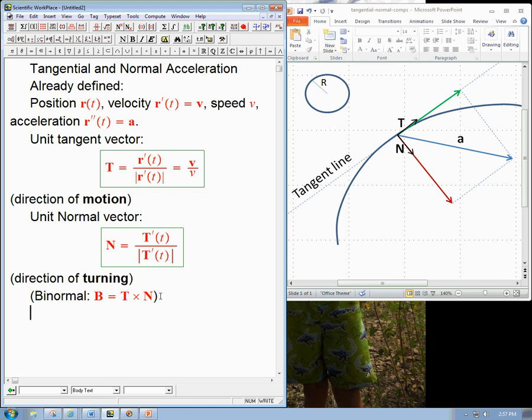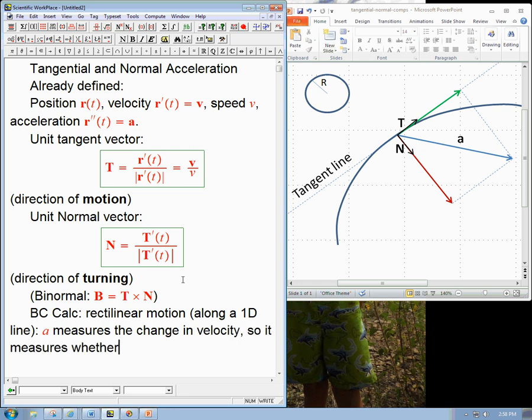Okay, so now what about a little bit of intuition from BC calc? That is rectilinear motion along in one dimension. Rectilinear motion along a 1D line. Well, we know that the acceleration measures the change in velocity. And so it measures whether I'm being pulled to the left or right.